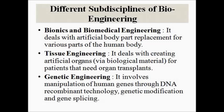Next is tissue engineering, which deals with creating artificial organs. These artificial organs are created by combining some biological material with some artificial man-made materials. A good example is the artificial heart pacemaker, where artificial organs are used. Artificial skin is another example. Tissue engineering deals with artificial organs where some components are natural biological and some components are artificial.